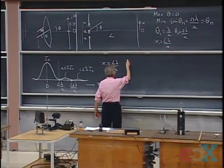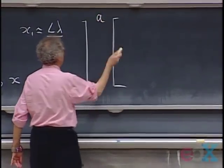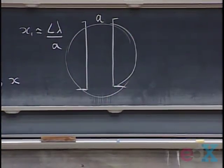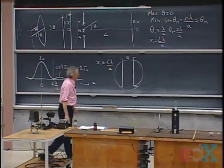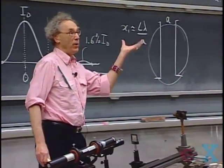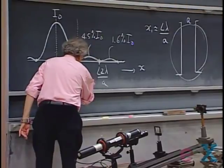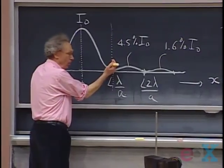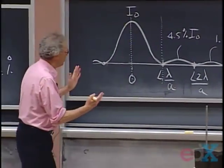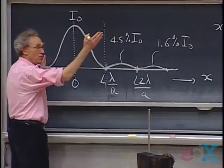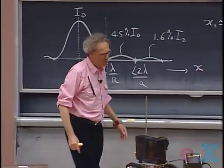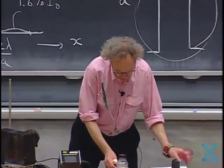I have a demonstration with a variable slit, and we'll use our brightest laser — green, about 5,400 angstroms. I'll start with a large opening of maybe 5 millimeters. At large A, the diffraction width is negligibly small and the spot size is dictated by laser beam divergence. As I make A smaller and smaller, there comes a time when the diffraction width dominates, and the bright spot gets wider and wider and wider.